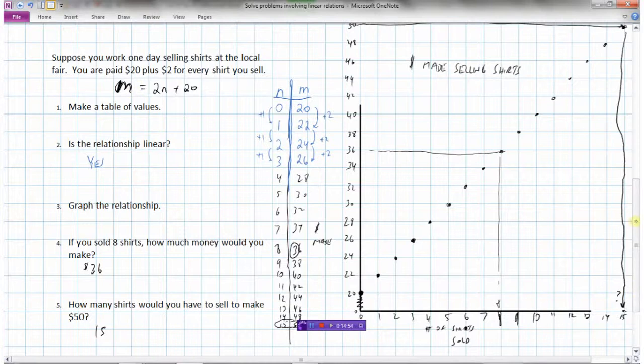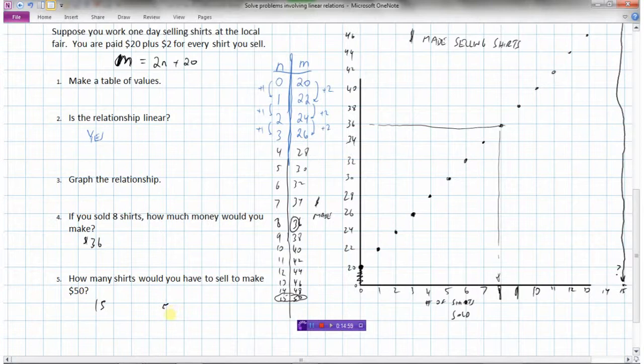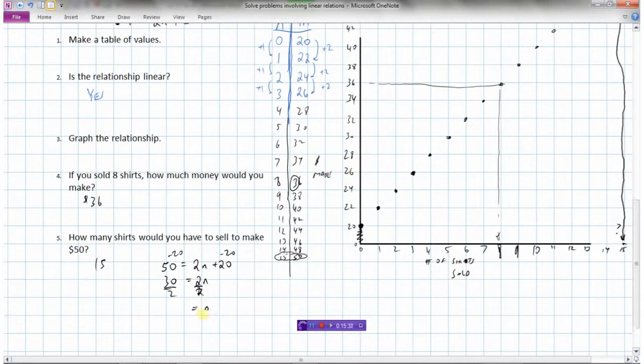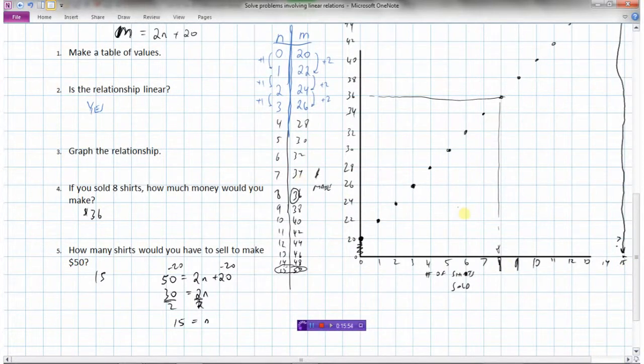Or we could even use our equation. And this is a little bit tricky. But we know that the money has got to be $50. So M is $50. And now we have to find out how many shirts we would need to sell. So we could take 20 away from both sides and get 2 times N now is 30. So we know we got paid $20 for the day. So if we're selling how many shirts to make $50, it's really $30 worth of shirts that we're selling. And if each shirt is worth $2, we'll divide everything by 2 to get N equals 15. So this is a little bit advanced. If you haven't done algebra yet, maybe you didn't do that in a previous course. We're certainly going to learn that a little bit later. You could always figure that out by using your table of values or by using your graph.